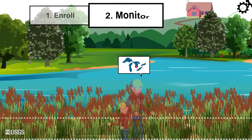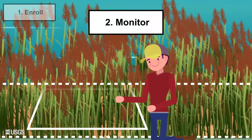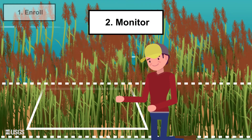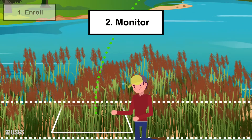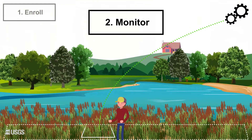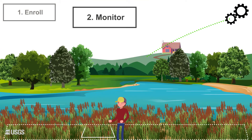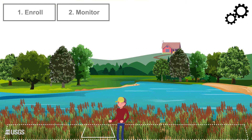Next, you will monitor your management units following a simple and standardized protocol, and report these data in the Web Hub. Monitoring, which happens each July, allows PAMF to understand the state of Phragmites infestation, as well as characterize site conditions.